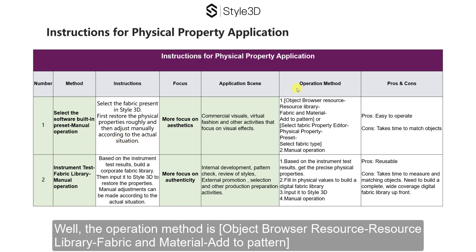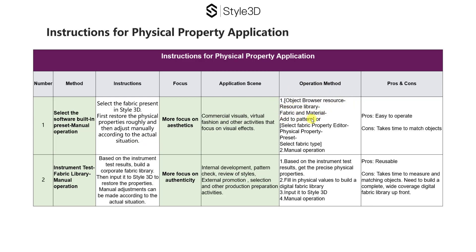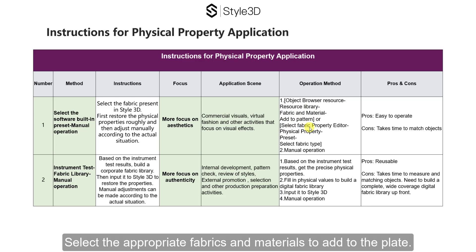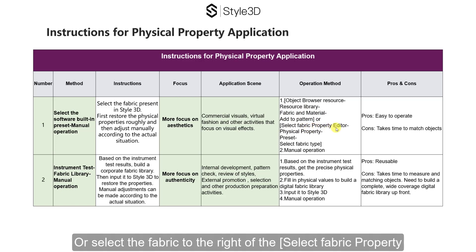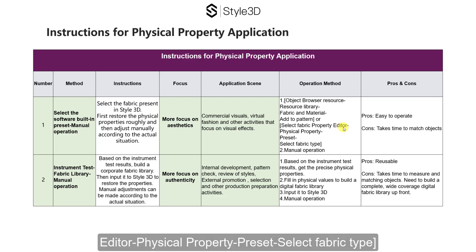The operation method is: Object Browser > Resource > Resource Library > Fabric and Material > Add to Pattern. Select the appropriate fabrics and materials to add to the plate, or select the fabric to the right, select Fabric Property Editor > Physical Property > Preset > Select Fabric Type.